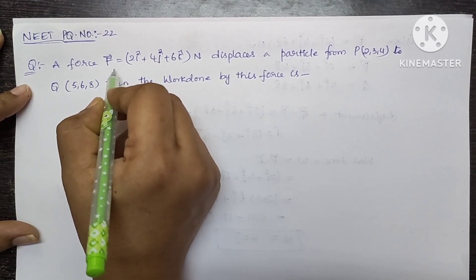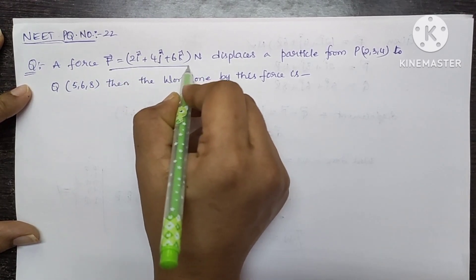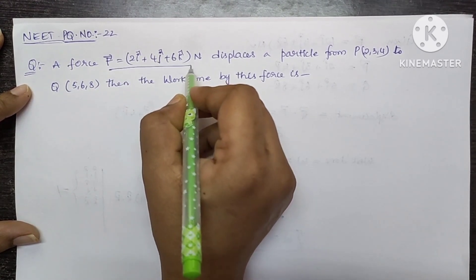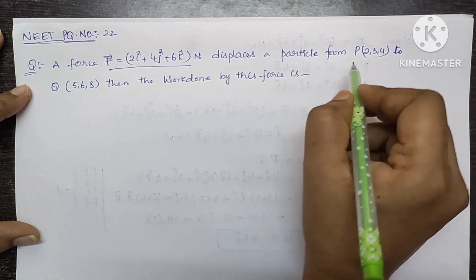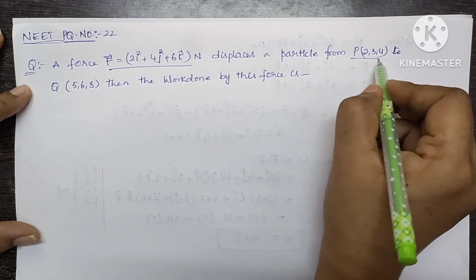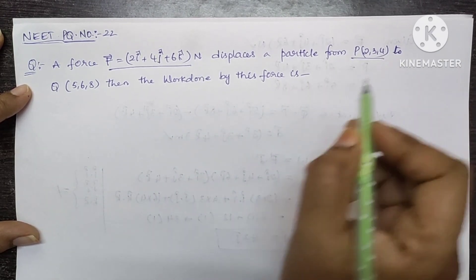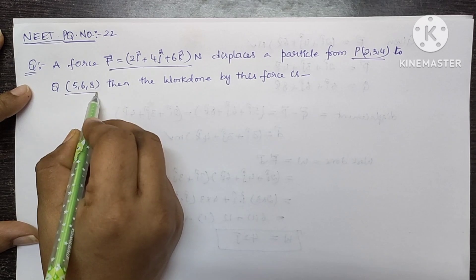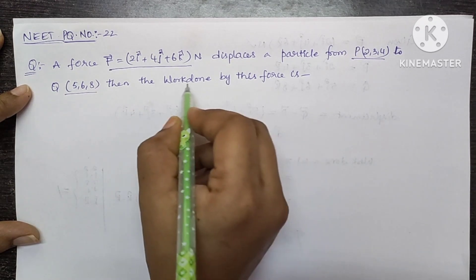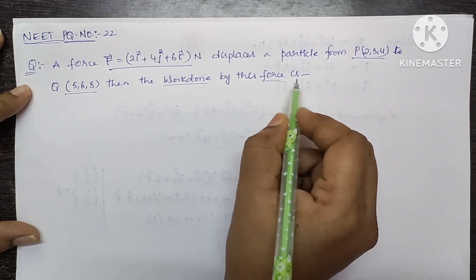A force F equal to 2i cap plus 4j cap plus 6k cap Newton displaces a particle from P of (2, 3, 4) to Q of (5, 6, 8). Then the work done by this force is?